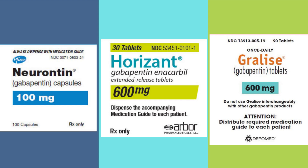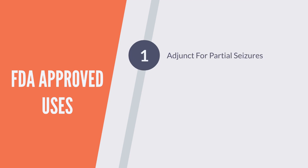The two FDA-approved uses of gabapentin are: firstly, as an adjunct in the treatment or management of partial seizures. What adjunct means is that gabapentin by itself may not be used to treat partial seizures, but it may be used in conjunction with other medications.